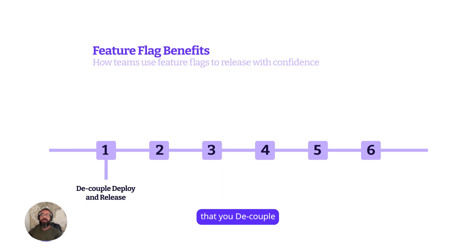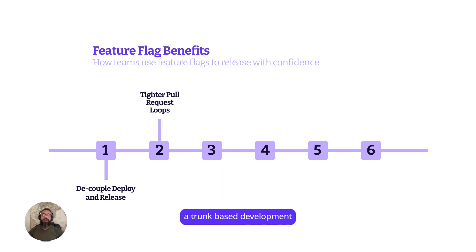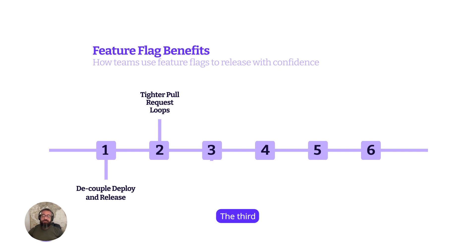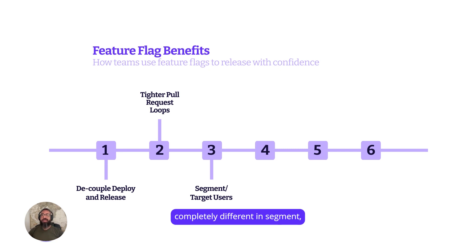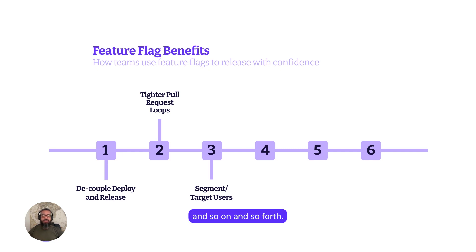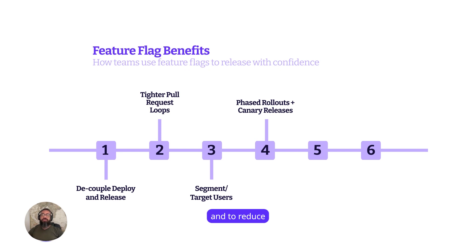The first thing is that you decouple deploy and release. You can also move to a trunk-based development and deploy more often and regularly. You can segment your audience — your users, your customers — by age, by region, or by profile. Or you can segment by platforms, mobile versions, or semantic versions. It also enables you to do canary releases, staged rollouts, and to reduce or eliminate merge conflicts.